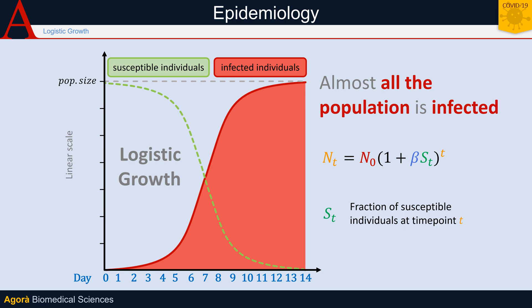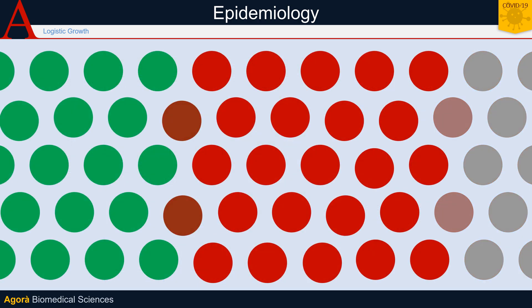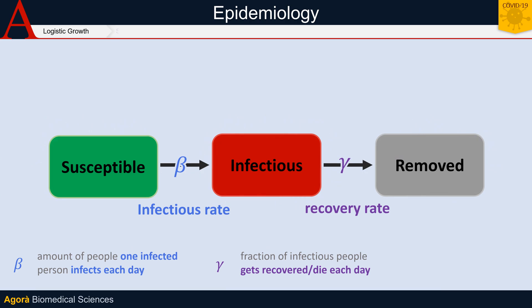However, it only shows the total number of people who are infected, and does not take into account that a COVID-19 patient does not remain contagious forever. After a certain time, although the span may vary, the patient heals — or, worst-case scenario, dies. Technically, we speak of 'removed,' because from a mathematical point of view, it does not matter whether an individual heals or dies.